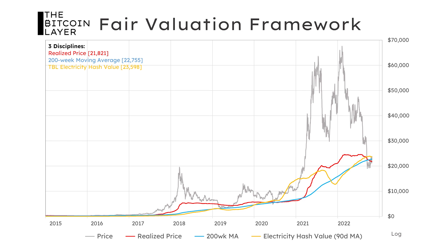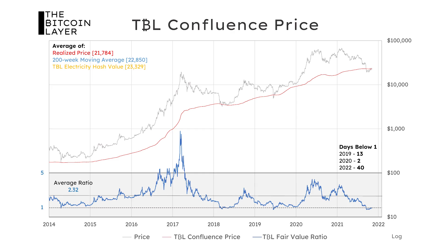Instead of looking at all these lines without context, let's turn to the Bitcoin Layer's confluence price — simply an average of the three metrics we've explained. We're also showing the fair valuation ratio on the bottom panel, which is simply the price divided by our TBL confluence price. The average fair valuation ratio over the last several years — meaning the average ratio of Bitcoin's price to our TBL confluence price — is about 2.3. That should be the average fair valuation ratio you keep in your head.